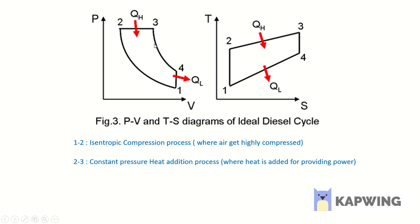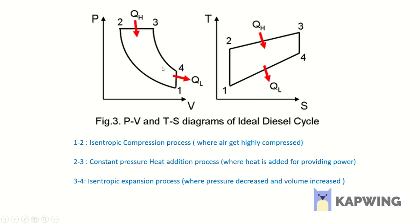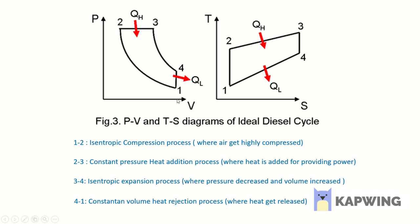From 3 to 4, you can see that pressure decreases and volume increases, so process 3 to 4 is the isentropic expansion process. From 4 to 1, pressure decreases while keeping the volume constant, so 4 to 1 is the constant volume heat rejection process.